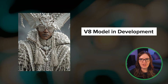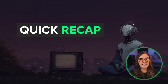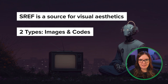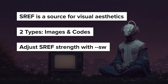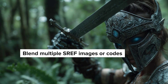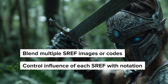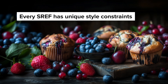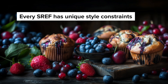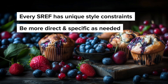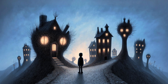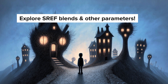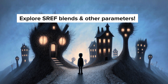I'll be sure to cover any new style tools and changes as they're released in future videos. To quickly recap: a style reference is a source for visual aesthetics. There are two types — images and sref codes. The influence of any style reference can be adjusted with the style weight parameter. If you're blending multiple sref codes or images, you can assign individual weights by using two colons and a number, though for images this only works on Discord. Style references come with their own baked in characteristics and constraints which can affect how well they work with your prompt text. When pushing an sref beyond its natural style space, you may need to be more direct and specific in your prompts. You can create custom styles by blending multiple srefs, layering in other parameters like personalization, stylize, and exp, and soon we'll have a style creator for even more customization.